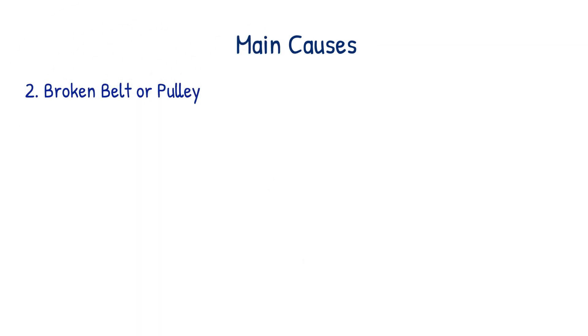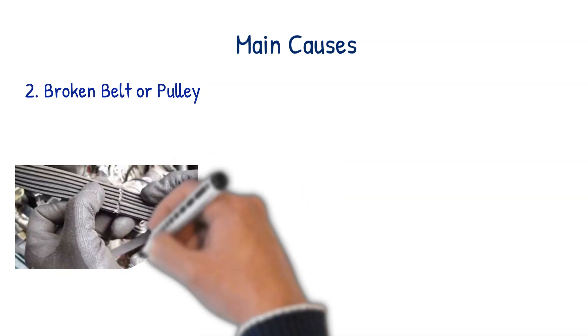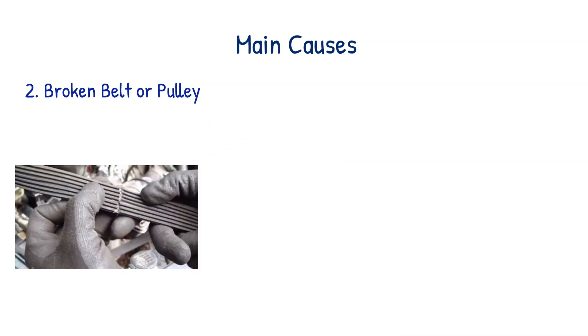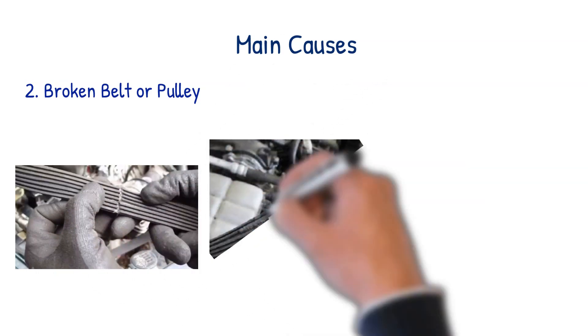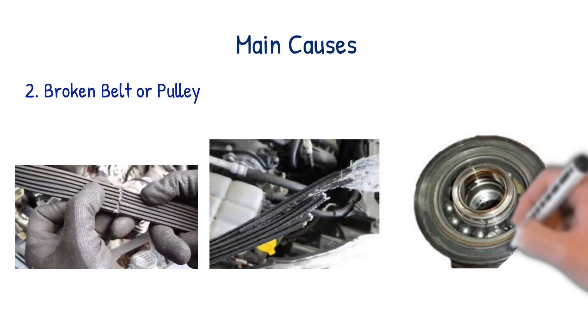The belt and pulley produce the mechanical power which gets converted into electrical energy by the alternator. Your belt can easily break if it gets stretched out too much, causing it to snap apart. The pulley can also get damaged after a while. In either case, the alternator will no longer be able to charge the battery.